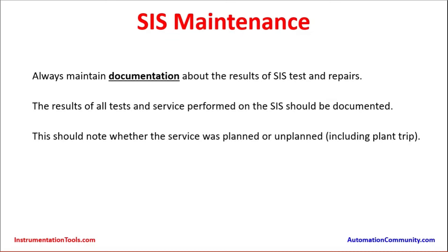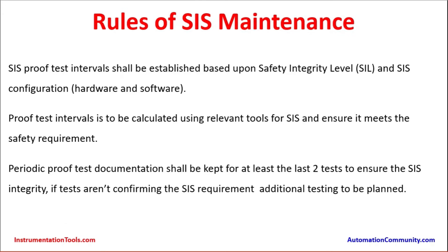For example, there may be a planned shutdown on 20th November for proof testing of a particular sensor and final element, but a planned trip happened around the 10th or 15th of November — a week before the actual proof test date. During this shutdown, the Safety Instrumented System would have acted, and the shutdown time can be utilized to do the proof testing on those instruments.